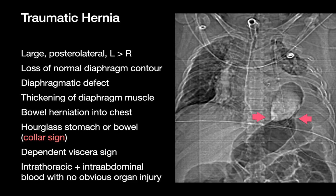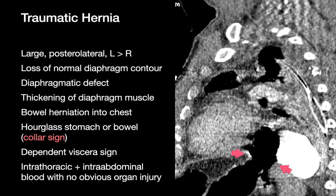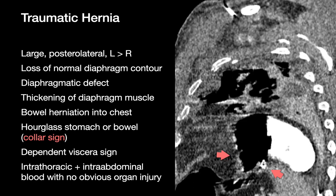Traumatic hernias tend to occur in the posterolateral diaphragm near the site where the transverse septum fuses with what will become the muscular diaphragm. Because the left hemidiaphragm isn't shielded by a large solid organ like the liver, traumatic diaphragmatic hernias are much more common on the left side. On trauma CTs, besides looking for obvious herniation of abdominal organs into the chest, we inspect the diaphragm carefully: does the arc look different, does the thin muscular line appear interrupted or focally thickened, and is there a collar sign where the herniated bowel or stomach is focally constrained as it passes through the defect?